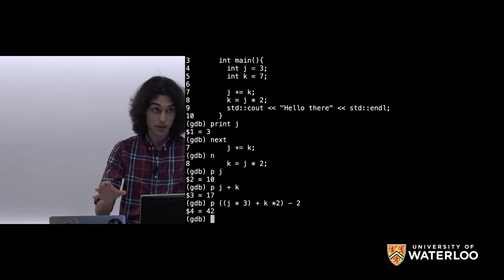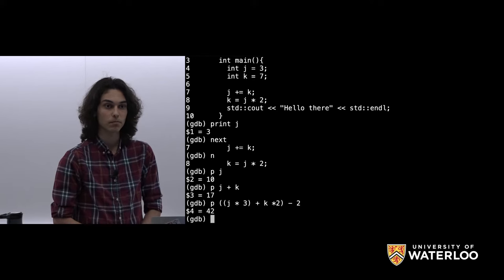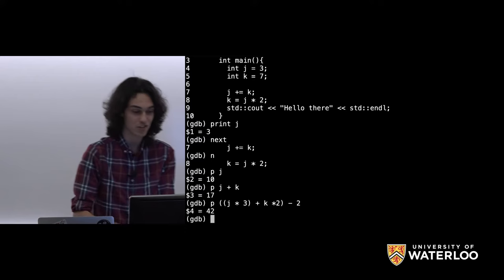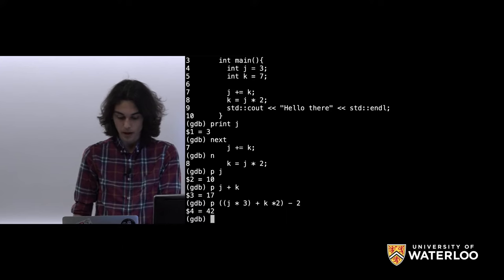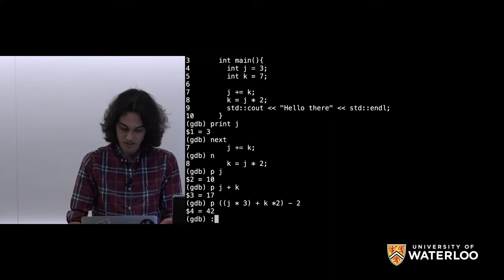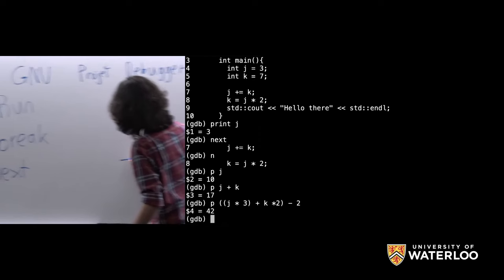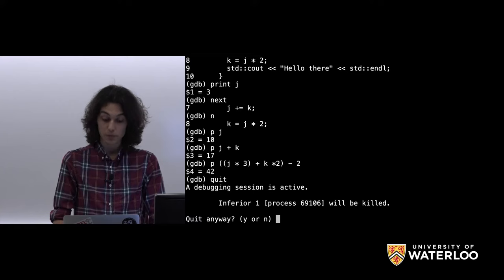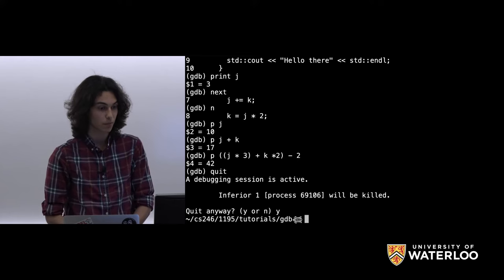That's it for this specific example. There was a question about function calls — we'll get to that later. To exit GDB, we have the 'quit' command. This isn't vim, so you can't type ':q', but 'quit' lets us leave our current GDB instance. If the program is still running, it will ask us to confirm. We say yes, and we're back where we started.